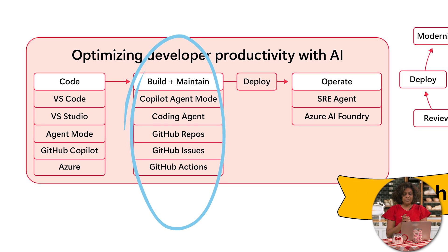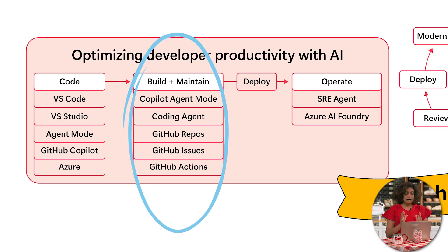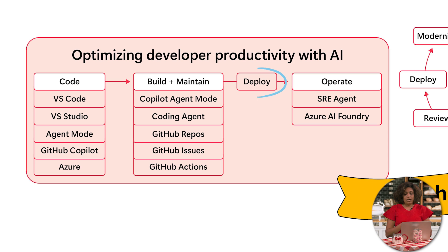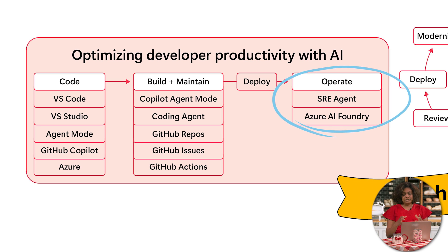Then you come into build and maintaining, where Copilot's coding agent and agent mode come into picture — whether you're building in VS Code or Visual Studio. GitHub repos, issues, and Actions come in during that build and maintenance phase, and then you deploy. I've got MCP connectors to deploy directly from VS Code into Azure. Operating is the last step, where you've got SRE capabilities and Azure AI Foundry integration to connect what kind of model you're hooking up with your code.